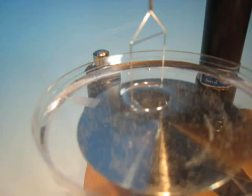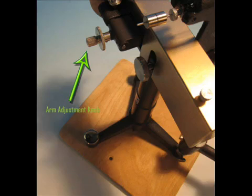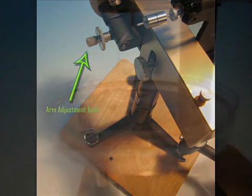At this point, use the arm adjustment knob to move the pointer back to the mirror line. Repeat this process of slowly lowering the sample until the pointer moves above the mirror line.